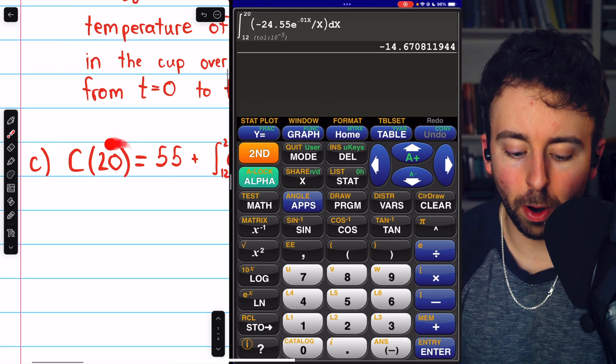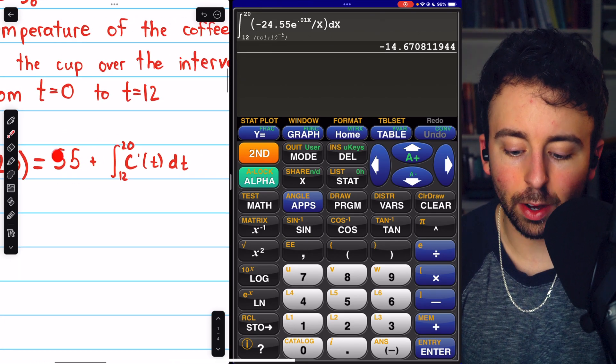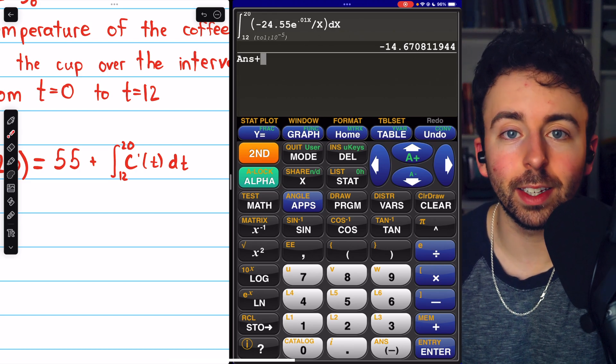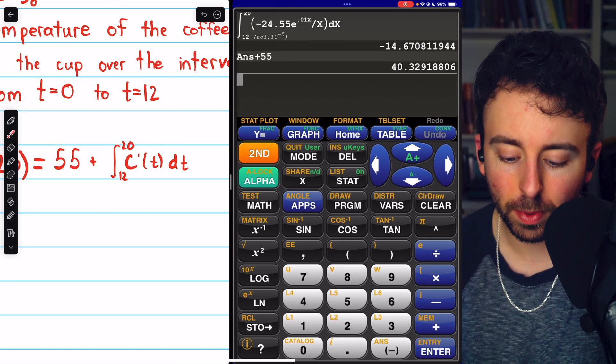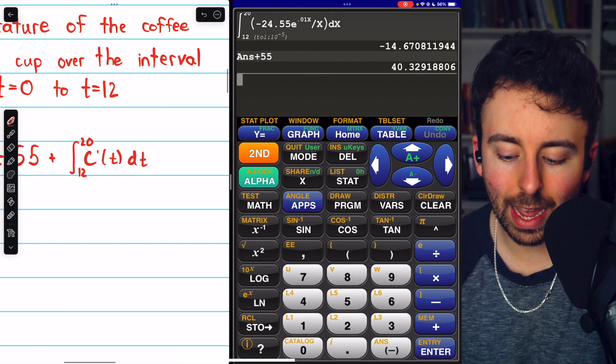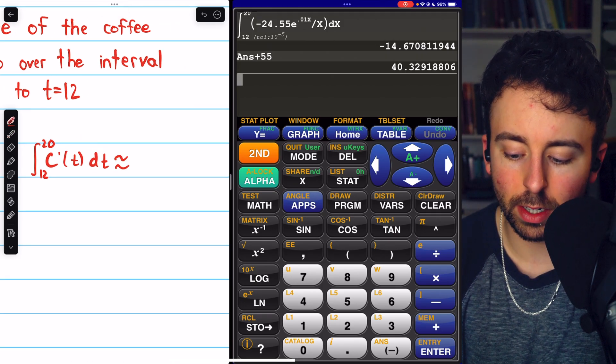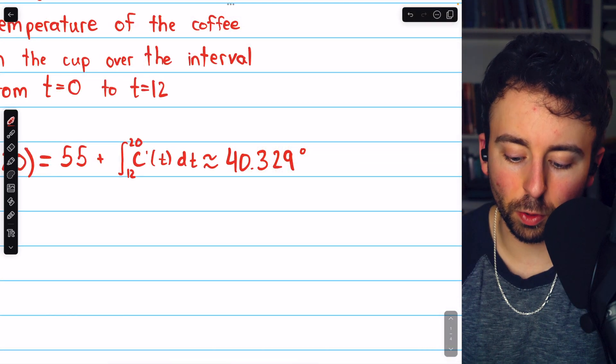But of course, coming down to part c, we know that we also have to add 55 to this. That was the initial temperature, so to speak, at time t equals 12, which is where we started the integral. So adding 55, we get our answer of about 40.329. And that is in degrees Celsius.